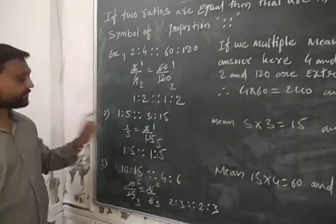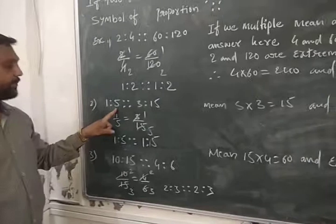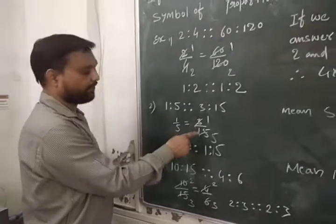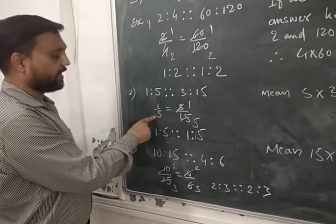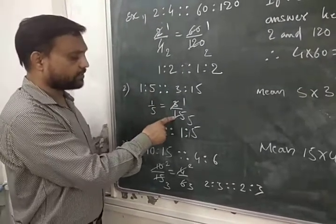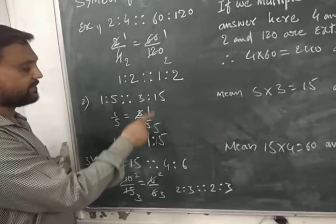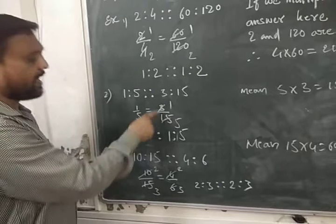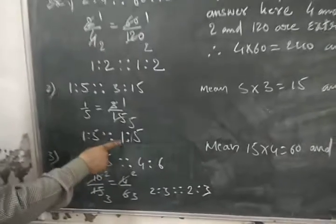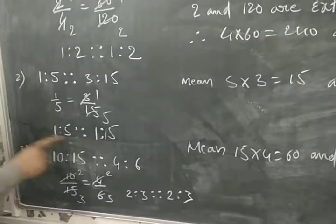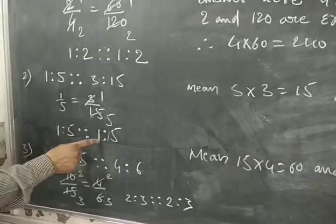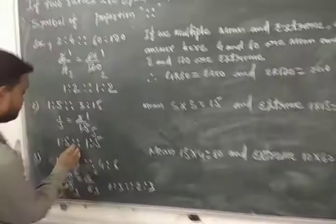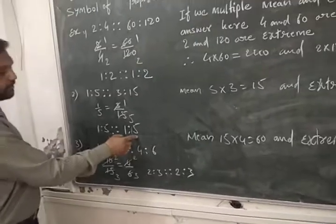Second example: one is to five, proportion to three is to fifteen. One upon five equals three upon fifteen. One upon five is not going to be reduced, but three upon fifteen is going to be reduced — three ones are three, three fives are fifteen, so the ratio of three upon fifteen is one is to five. Both ratios are the same: one is to five, proportion to one is to five.